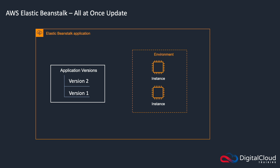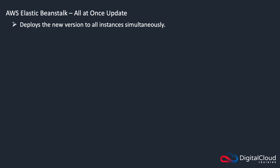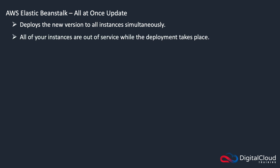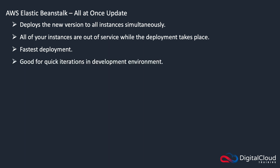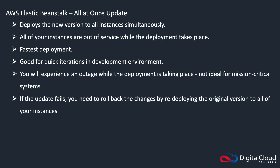Firstly, there's all-at-once — this is what we've done in the previous lesson. In this case you take down all instances, so whether you've got one or 10, it doesn't matter. All instances are taken down and the update is applied. That might be a quick update or a lengthy one, but the point is your application is taken down — so clearly not for production. All instances are updated simultaneously and are all out of service while the deployment takes place. This is the fastest way to deploy your update; good for quick iterations in development, but you wouldn't want to use it in production. You're going to experience an outage. If the update fails, you need to roll back the changes by redeploying the original version of the code. There's no additional cost because no additional instances are launched.